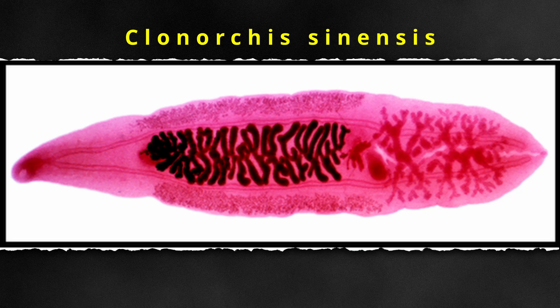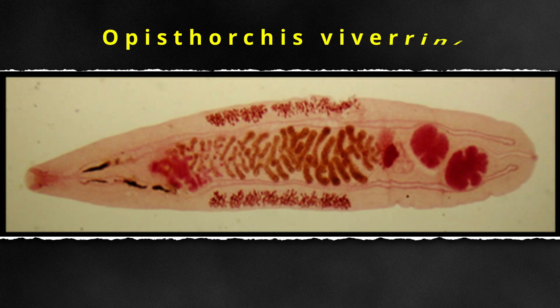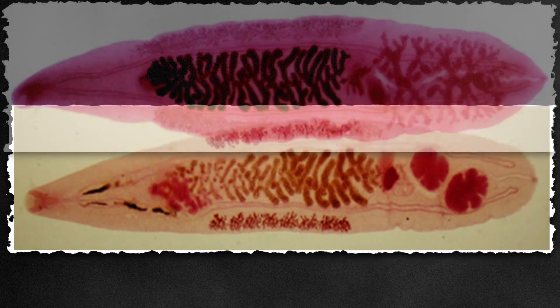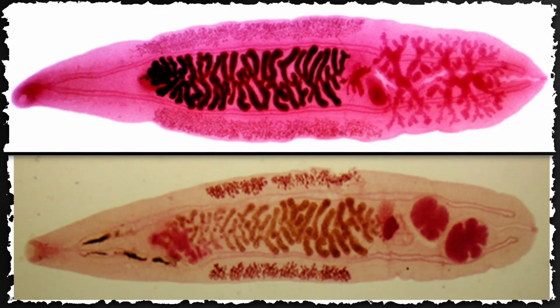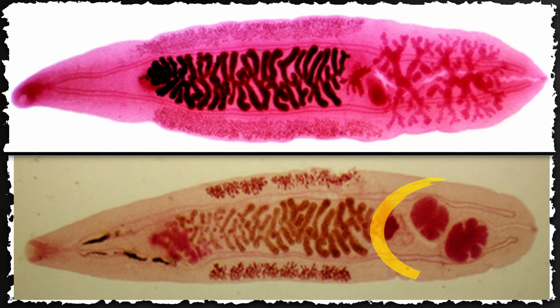Clonorchis sinensis is about 1 to 2.5 centimeters long and half a centimeter wide, making it smaller than the Fasciola species. Opisthorchis vivarini, on the other hand, is slightly smaller than Clonorchis sinensis, and its adult form can be about half the size of Clonorchis. A distinct differentiating feature between the two species are the posteriorly located testes. Clonorchis has tandem, highly branched testes, while Opisthorchis has obliquely arranged, lobate testes.